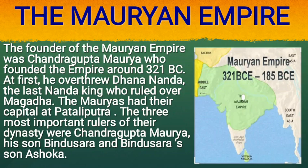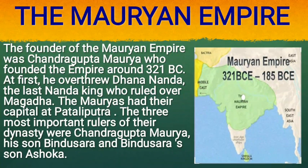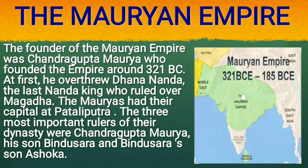The founder of the Mauryan Empire was Chandragupta Maurya, who founded the empire around 321 BC. At first, he overthrew Dhananand, the last Nanda king who ruled over Magadha. The Mauryas had their capital at Patliputra. The three most important rulers of their dynasty were Chandragupta Maurya, his son Bindusara, and Bindusara's son Ashoka.